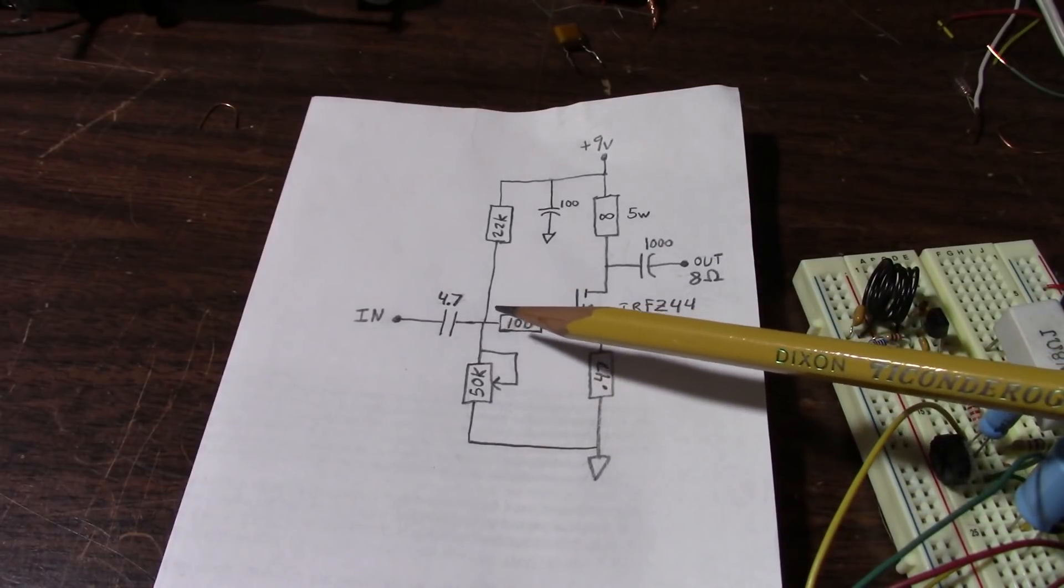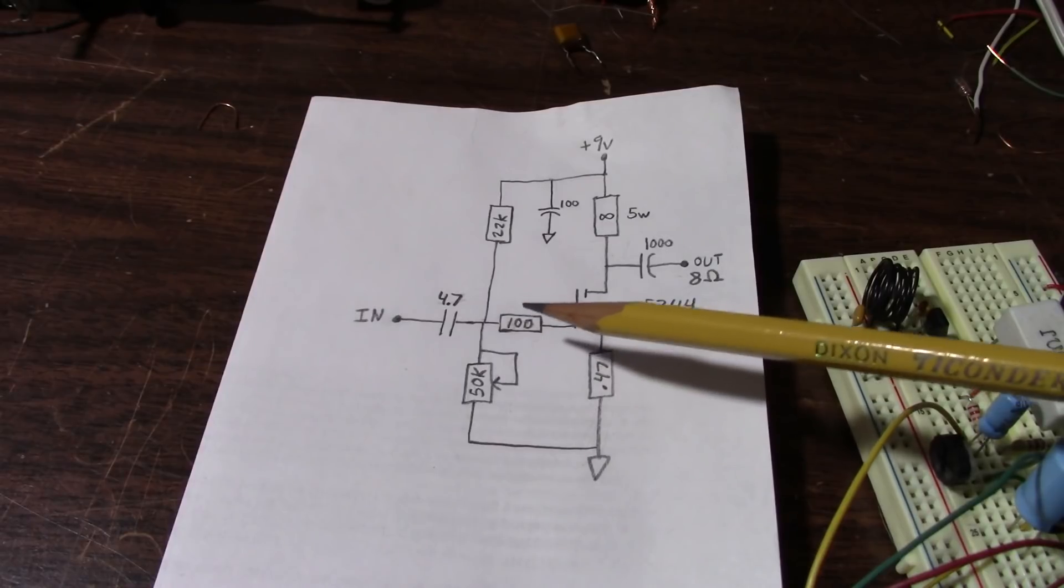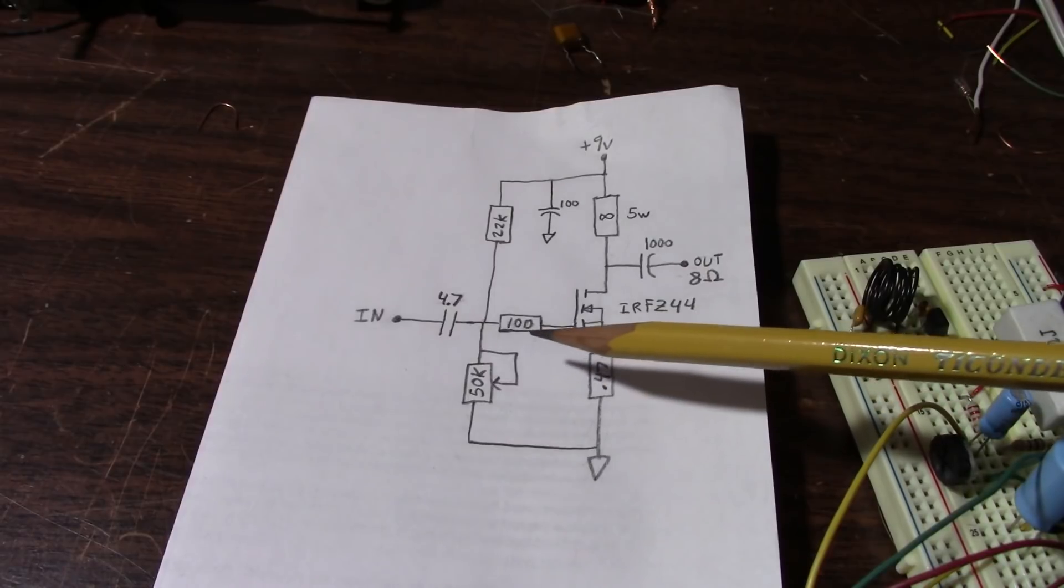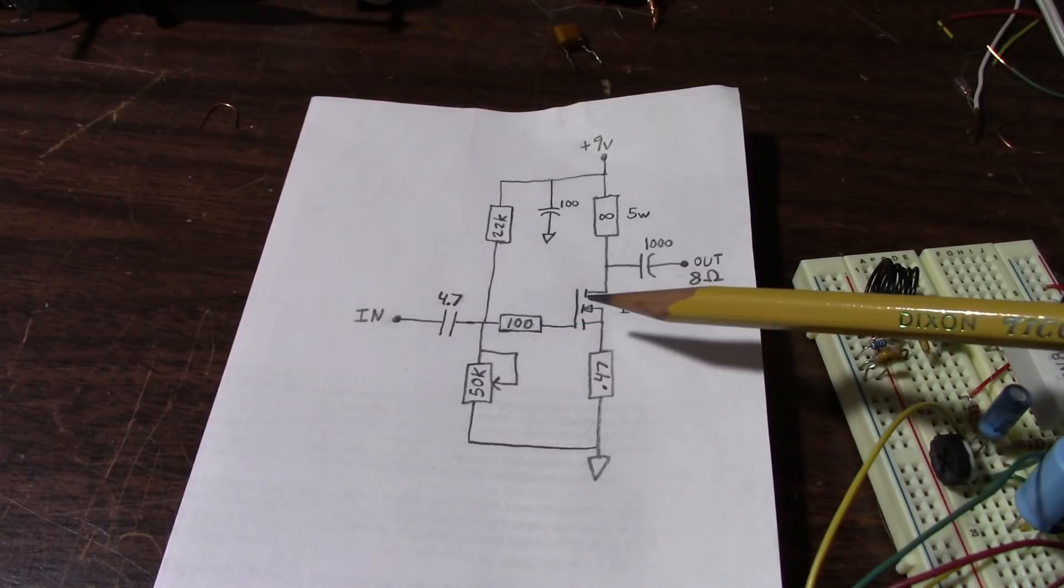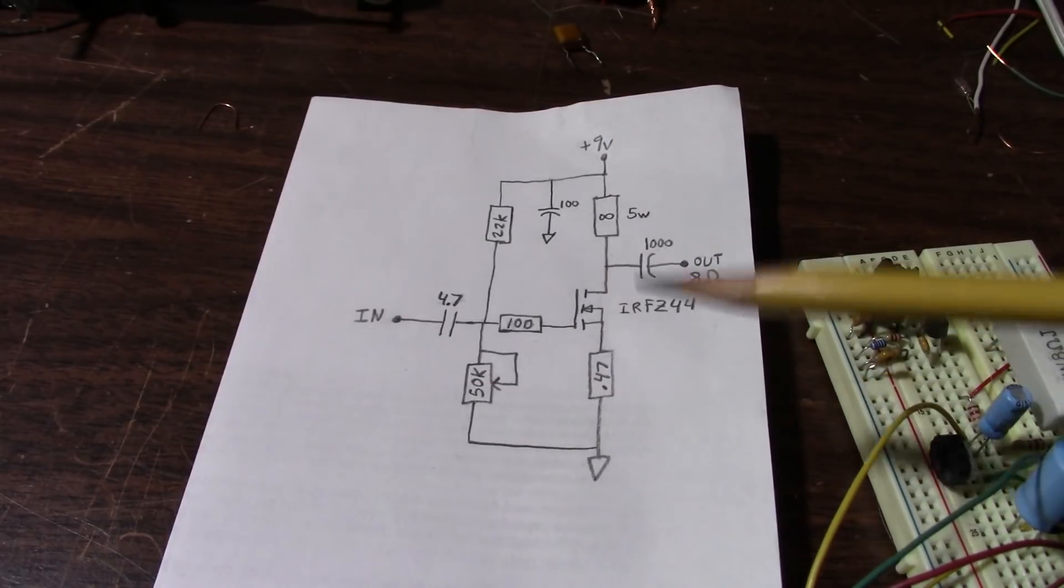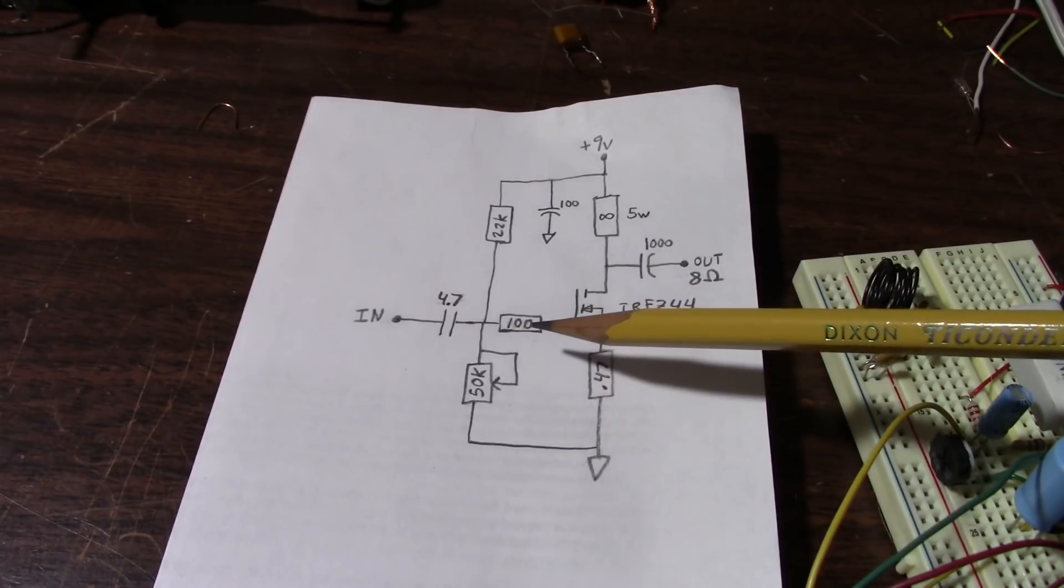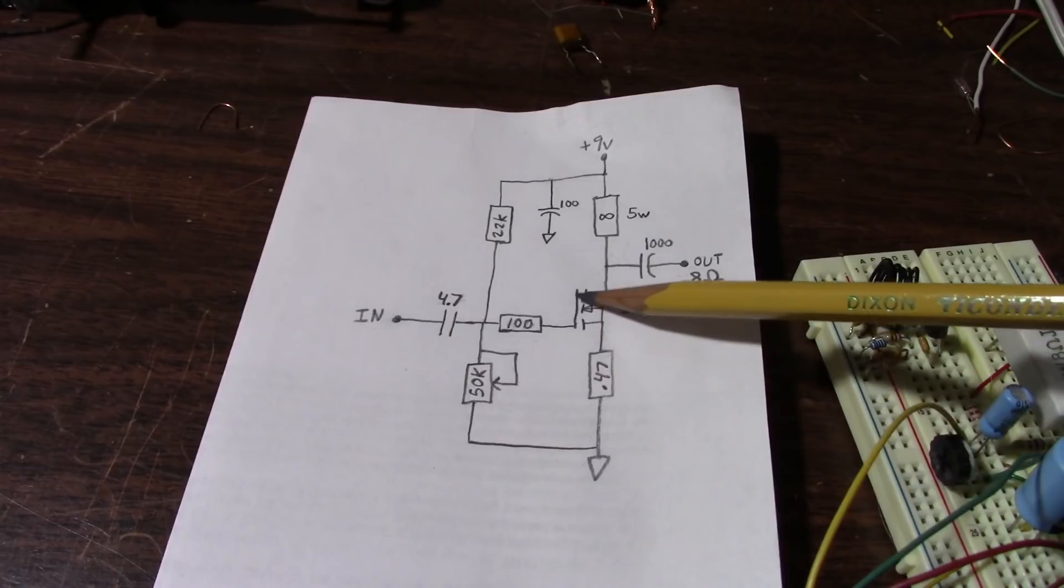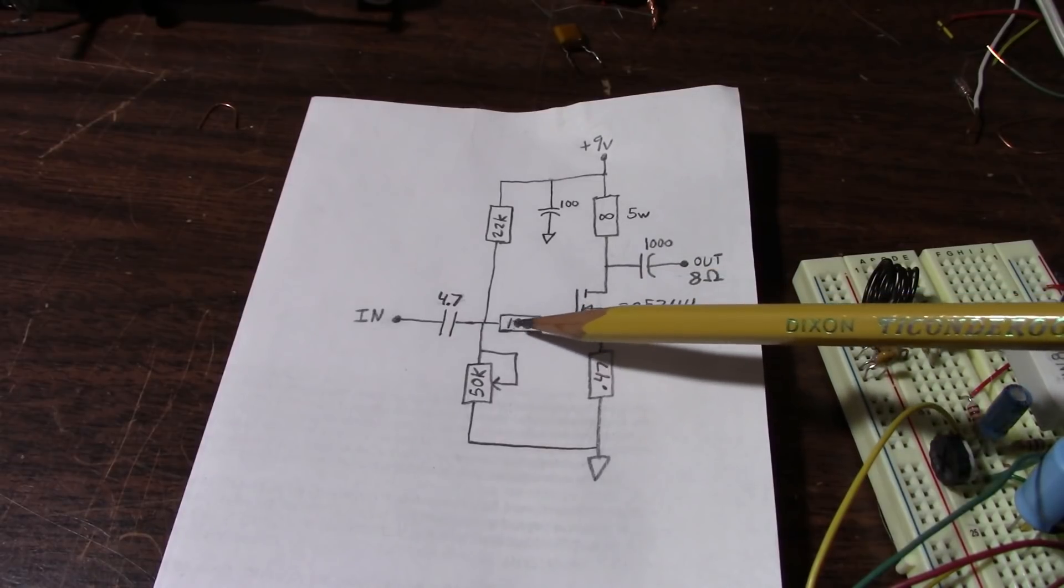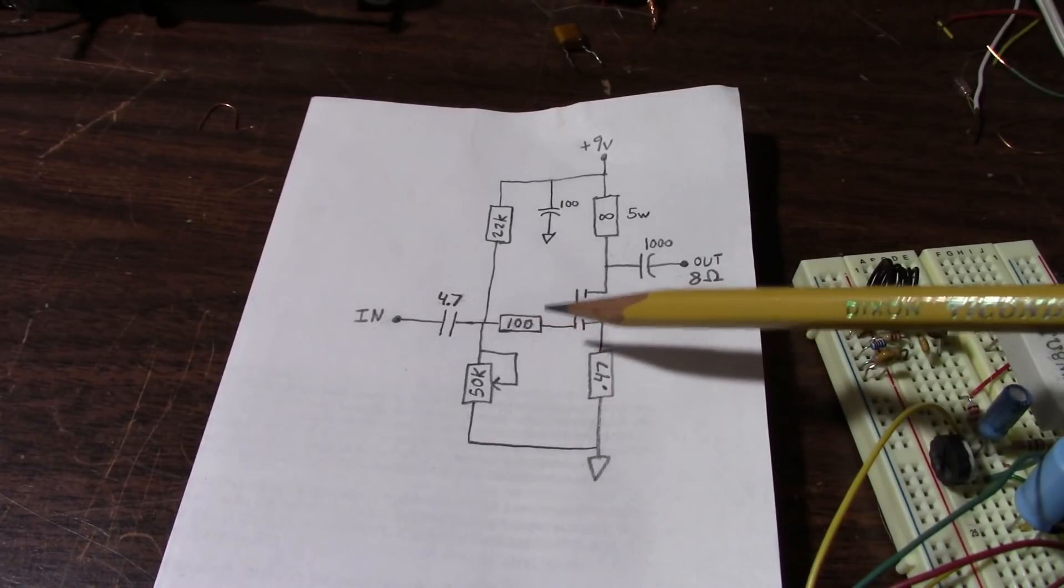This resistor here is called a gate stopper. You may not need it for the circuit, but what sometimes happens with these MOSFETs, I've seen them oscillate. One time I was using a MOSFET as a load to test the power supply and it was oscillating at some high frequency. So I had to include a stopper resistor to eliminate the oscillation. There is some capacitance in the gate here, and along with this resistor it acts as a low pass filter and you can eliminate oscillations.